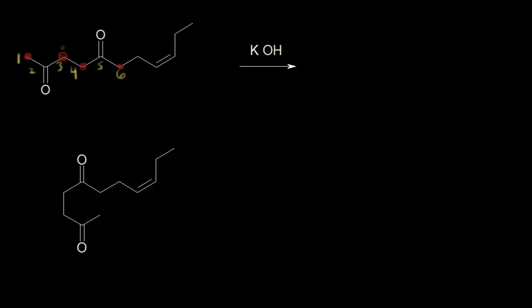Carbons three and four as alpha carbons would give us a ring with too much angle strain, so we can rule those out. It's down to thinking about carbon one or carbon six, and for that we need to look at the base — we're using potassium hydroxide here, a non-sterically hindered base that isn't very strong, so it's going to favor formation of the thermodynamic enolate, which is the more stable one because it's more substituted. Deprotonation at alpha-carbon one would give you the kinetic enolate — formed the fastest but not the most stable. Deprotonating at alpha-carbon six would give you the thermodynamic enolate — more substituted and more stable.